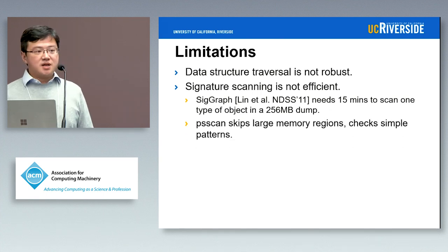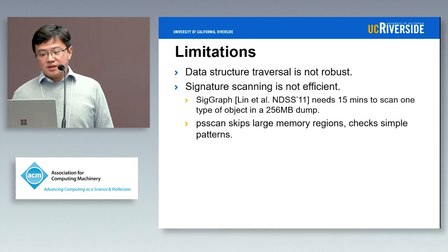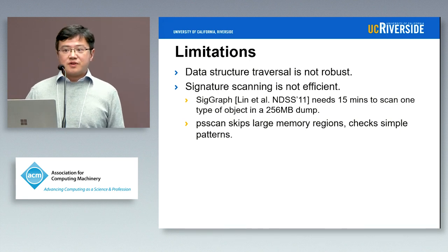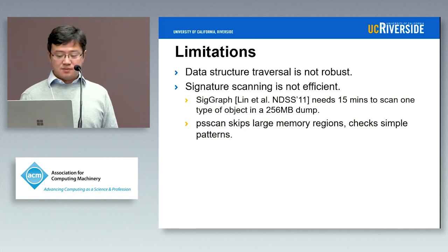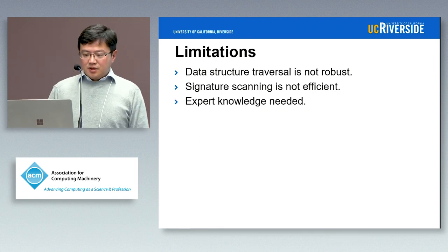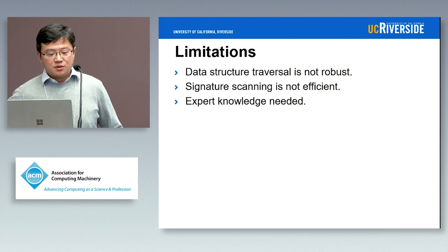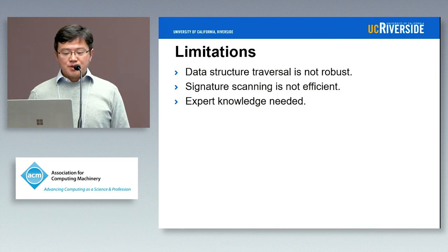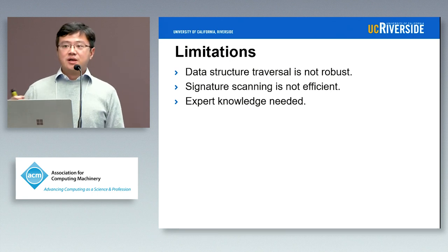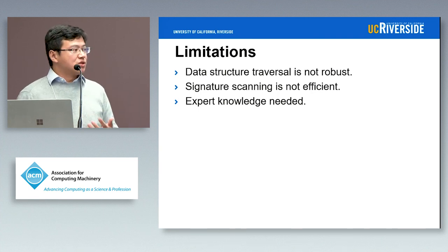On the other extreme, PS scan is a very simple plugin in Volatility. It's very fast, but to achieve that speed it skips large memory regions using very simple heuristics and checks only simple patterns. As a result, it's very easy to evade. For both data structure traversal and signature scanning, we need expert knowledge — data structure definitions, the semantic meaning of pointers, which constraints are more robust — to come up with traversal rules and signature patterns.